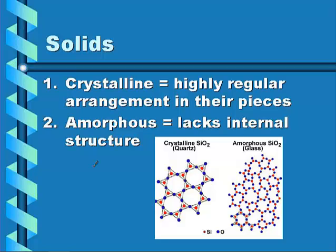We're going to be talking about two types of solids: crystalline and amorphous. Crystalline solids have a regular arrangement in their pieces, while amorphous solids lack internal structure. You can see in the picture below that silicon dioxide in its quartz form is a crystalline structure — it's very ordered — while silicon dioxide in its glass form is not ordered.